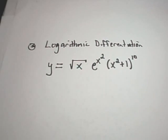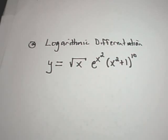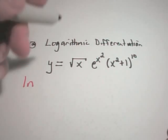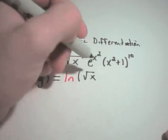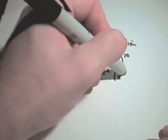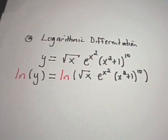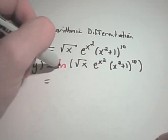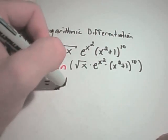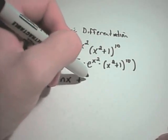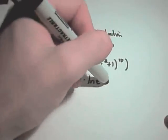Instead, I'm going to use logarithmic differentiation. All you do is take the natural logarithm — natural logarithms are easiest — of the left side, and then take the natural logarithm of the right side. Then use properties to break up the right-hand side. Since there are products, I'll get addition. This is x to the one-half, so I can rewrite this as one-half ln of x, plus x squared times ln of e, plus ten times ln of x squared plus one.